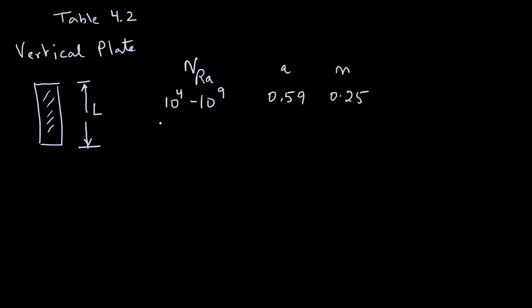If the range of Rayleigh number is determined to be 10 raised to power 9 to 10 raised to power 13, then constant A will be 0.1 and constant M will be 0.333. So, again, depending on the shape and the orientation of the object, we determine the value for Rayleigh number and then select the appropriate constants A and M in our equation.